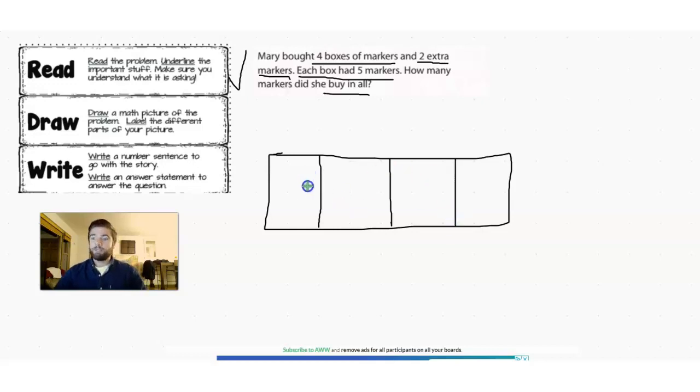And each box had five markers in it. So five, another box has five, another box has five, and another box has five. So basically we have four times five, or five plus five, plus five, plus five.